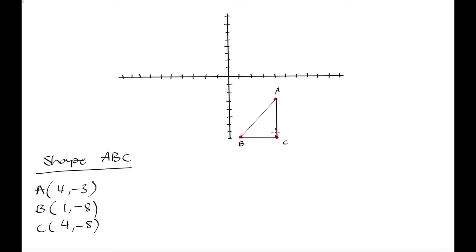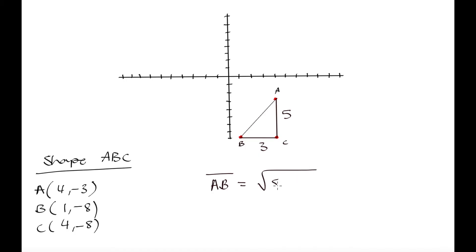We can see this forms a right angle triangle — the two sides BC and AC are perpendicular, giving a 90-degree angle. Side BC has a length of 3 units, going across the x-axis, and side AC has a length of 5 units going up the y-axis. Because we have a right angle and the lengths of two sides, we can use Pythagoras to find the hypotenuse: AB = √(5² + 3²) = √(25 + 9) = √34.